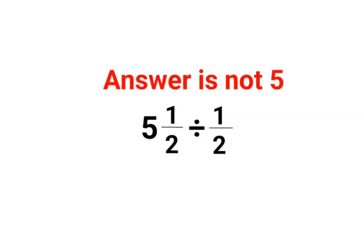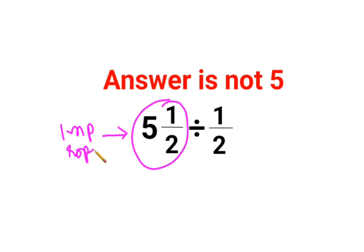Welcome everyone. So today the number is in mixed fraction form, so you need to first convert it to improper fraction form. So how do you do it? Improper form is nothing but — 5 and 1/2, right.